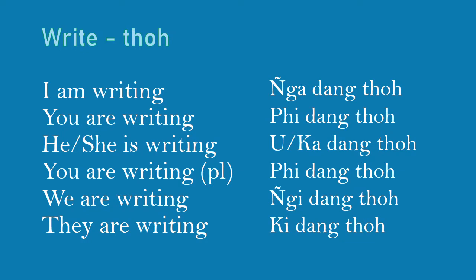Example with 'write' (THAW): I am writing — Nga DANG THAW. You are writing — Pi DANG THAW. He or she is writing — U DANG THAW or Ka DANG THAW. We are writing — Ngi DANG THAW. They are writing — Ki DANG THAW.